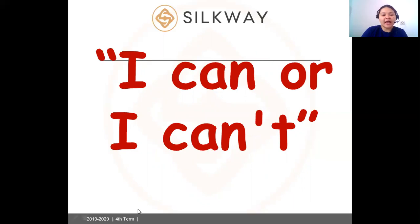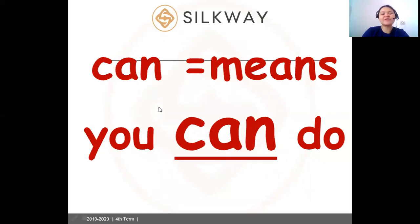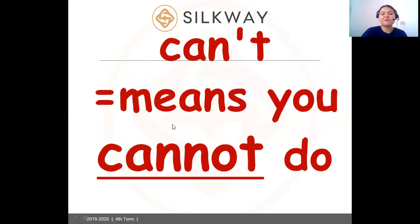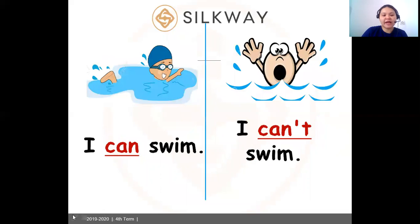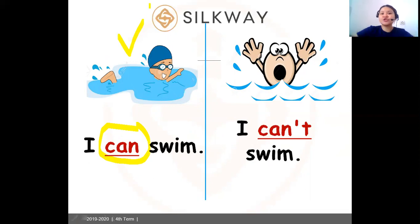And play board games. Now let's learn to say 'I can' — things that you can do — or 'I can't' — things that you cannot do. 'Can' means you have the ability to do something, and 'can't' means you cannot do something. For example: I can swim — or I can't swim, meaning I cannot do it.